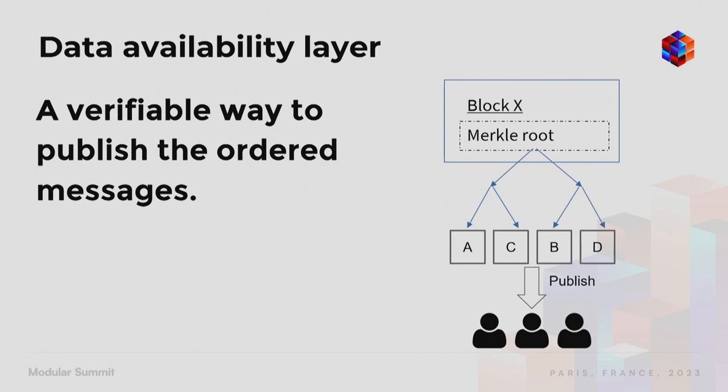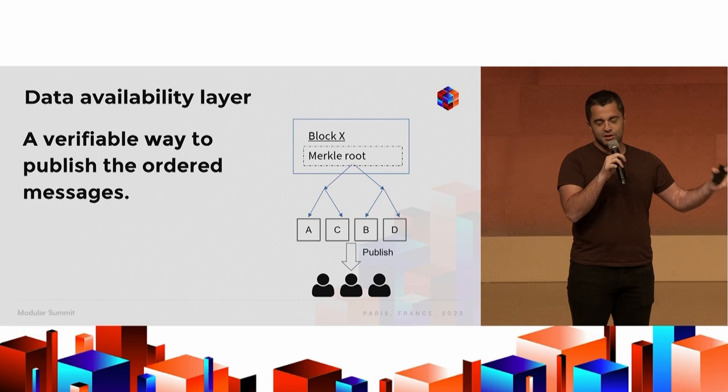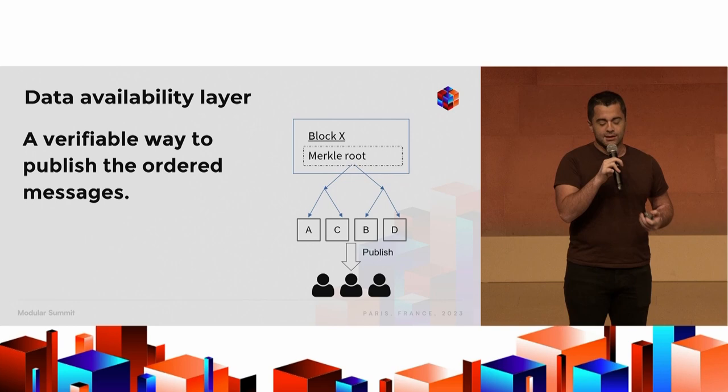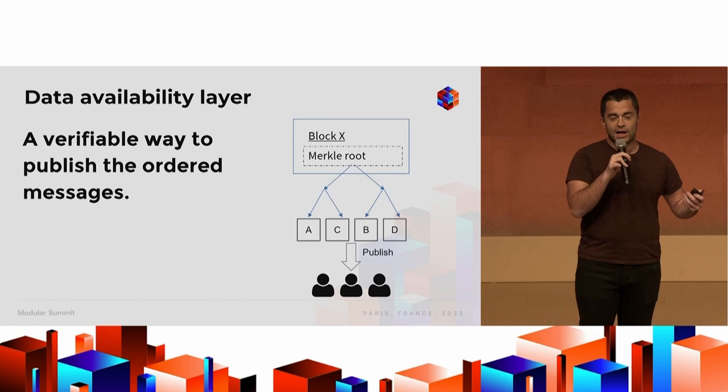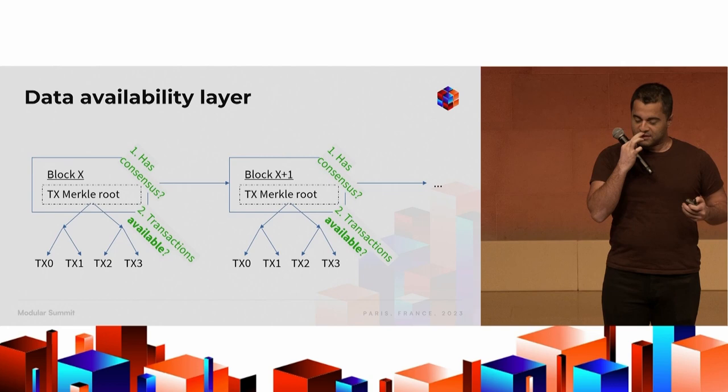Once those messages have been ordered, users need a way to verify that they've actually been published to the network. What could happen is a data withholding attack where a validator only publishes the metadata of the block header but doesn't publish the actual data. In that attack, no one will know what the actual ordered messages are, and no one will know the state of the chain or be able to generate fraud proofs or progress the chain.